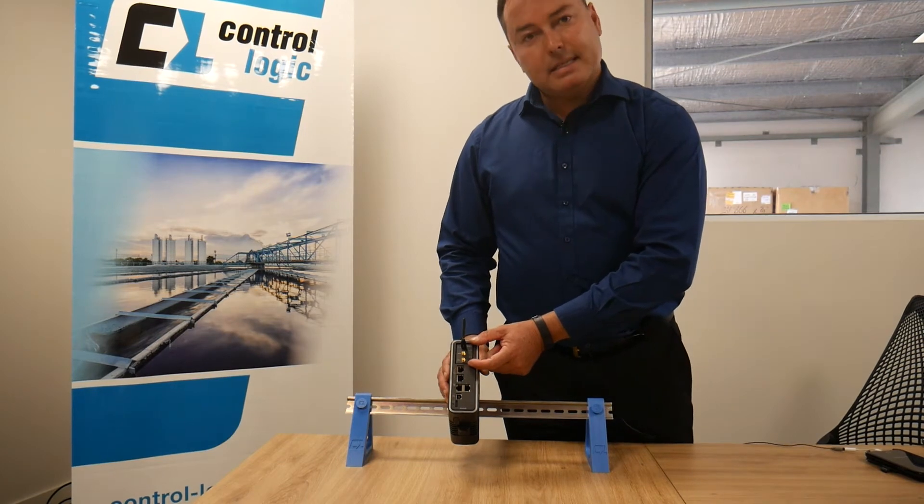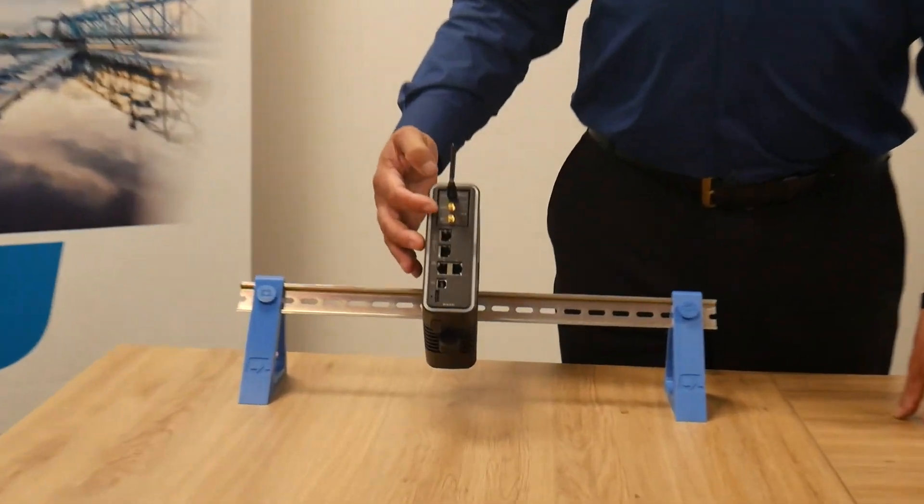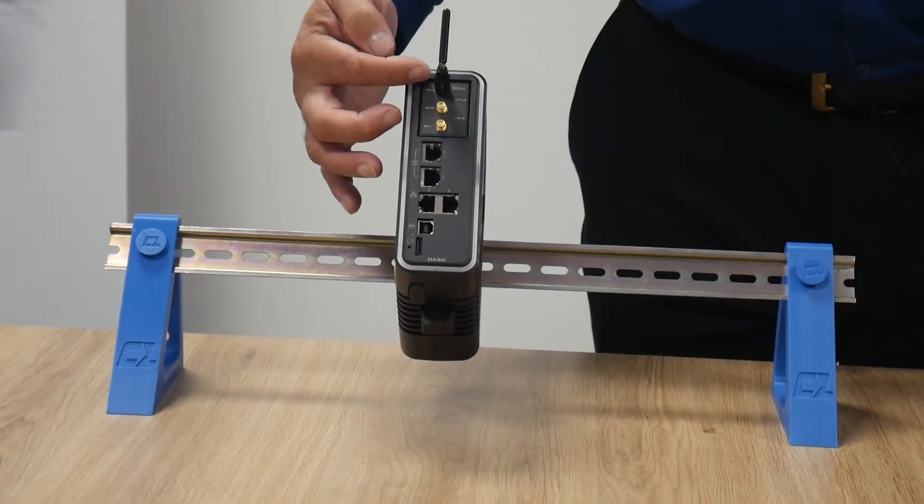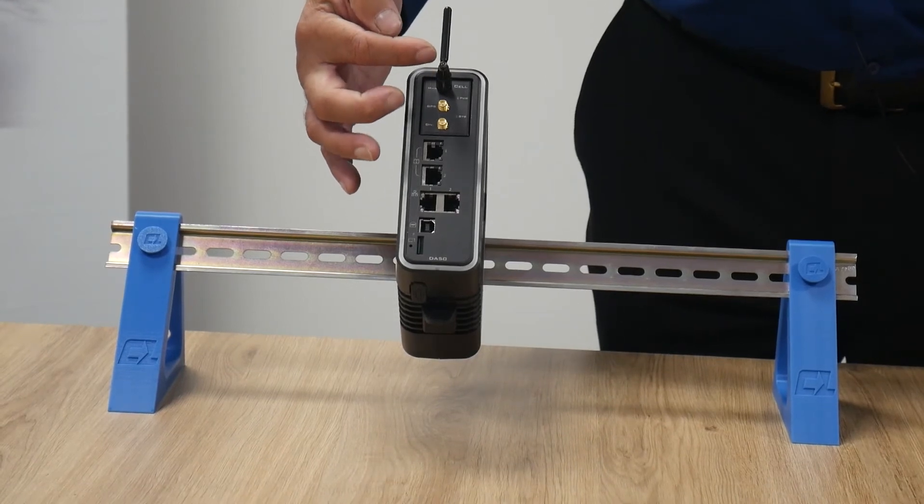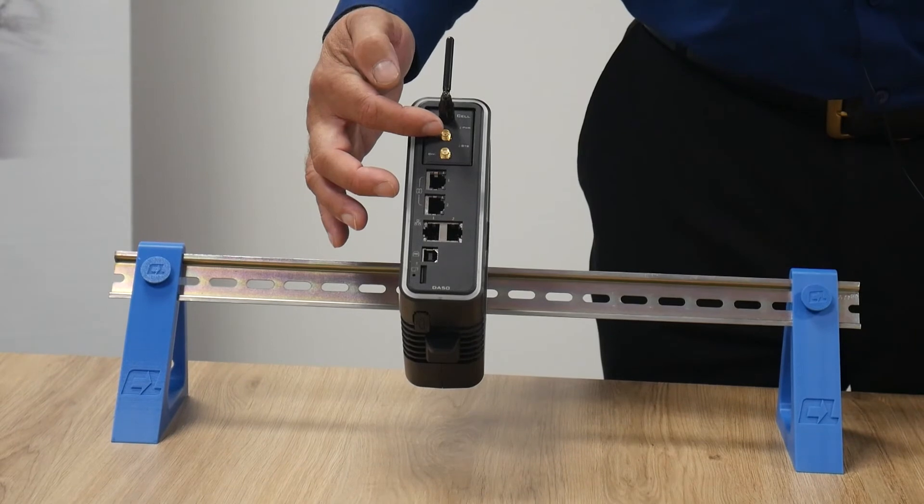Above that we have a sled. The sled is interchangeable and there are four different modules. This module that we're looking at now is a 4G module. It has 4G as well as a GPS functionality.